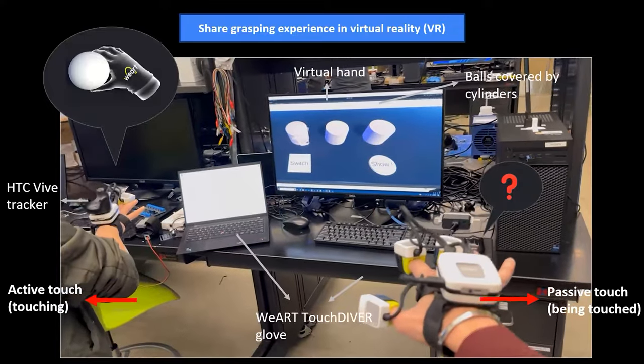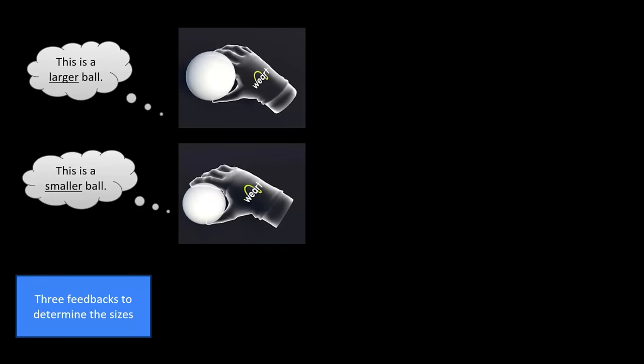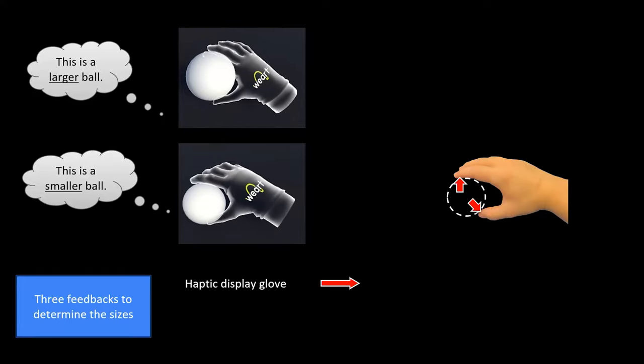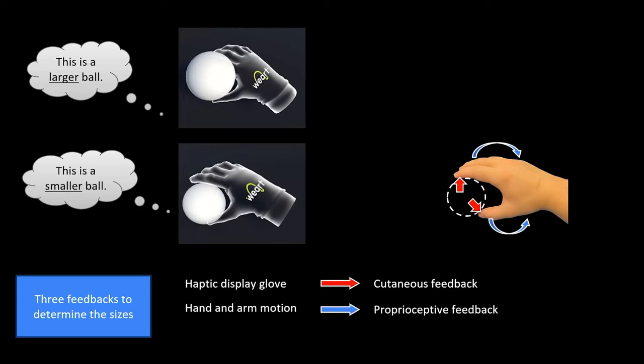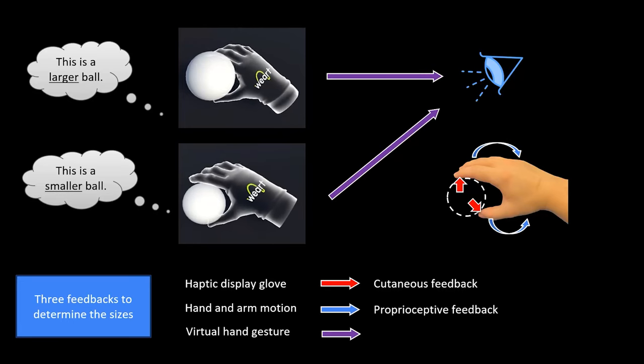This leads to our research question. In this scenario, determining the size of balls hidden by cylinders relies on three feedbacks: the cutaneous feedback from the haptic glove, the proprioceptive feedback from the arm and hand movements, and visual feedback through observing virtual hand gestures.